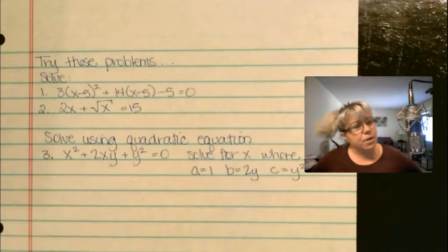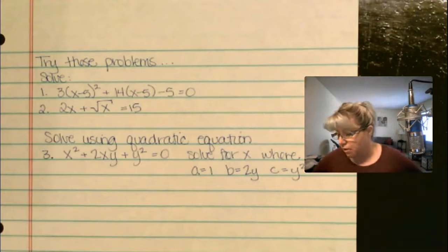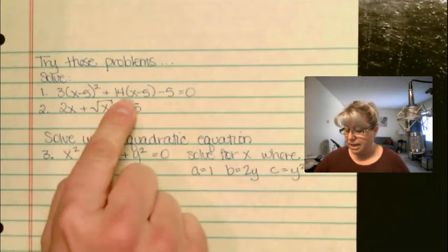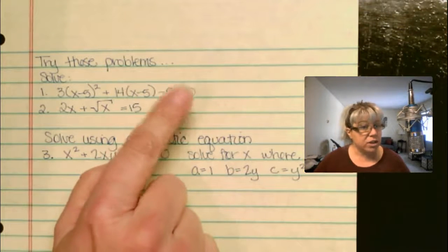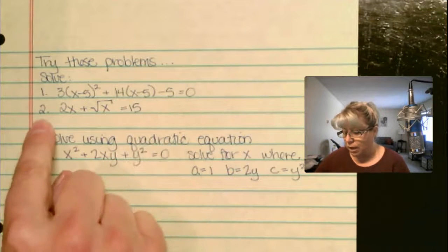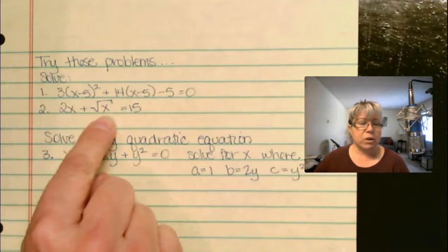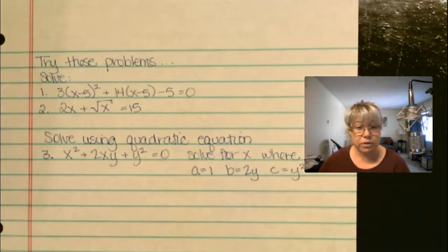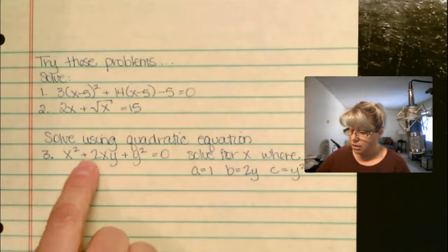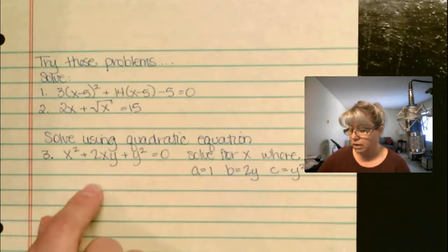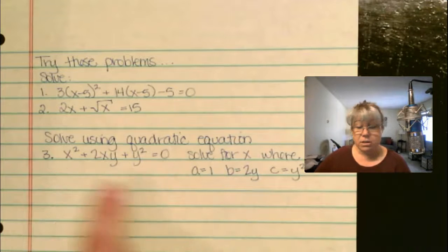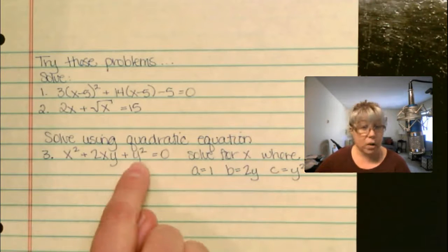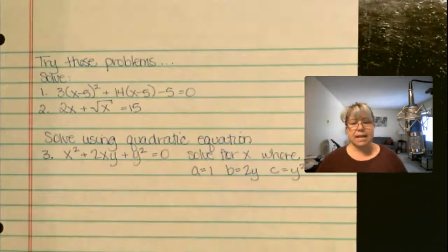That's it for this lecture. Why don't you go ahead and try these problems yourself. Solve 3 times x minus 5 squared plus 14 times x minus 5 minus 5 equals 0 — try using the substitution method. Likewise with number 2: 2x plus the square root of 2x equals 15 — first set it in standard form, then use substitution. For the third problem, solve using the quadratic formula where a equals 1, b equals 2y, and c equals y squared — solve for x. Until next time.